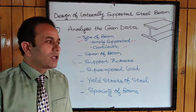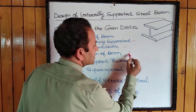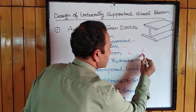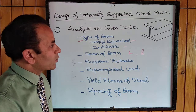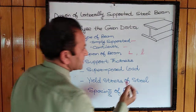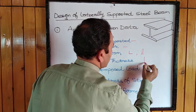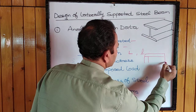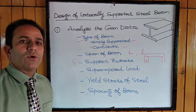The span of the beam — the clear span may be given — and accordingly we'll find out the effective span of the beam, which we'll use for calculating bending moments. Then support details: whether the beam is supported at two ends or at one end, and the support thickness must also be provided.